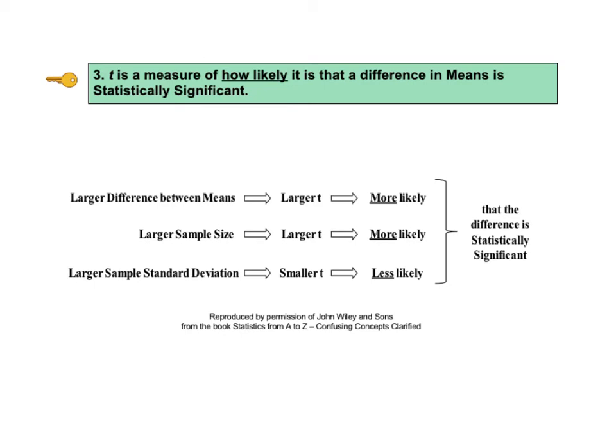And since the standard deviation is in the denominator, a larger variation in the samples will make t smaller. This is all summarized in the graphic. A larger difference between the means means a larger t, which makes it more likely that the difference is statistically significant. A larger sample size also means a larger t, which makes it more likely that the difference is statistically significant.